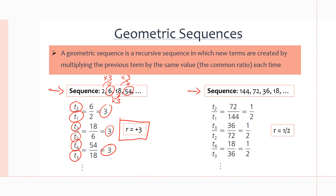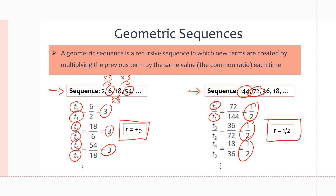For the next example we have 144, 72, 36, 18, and the numbers are decreasing. Taking the ratios: T2 over T1 is 72 divided by 144, which gives one half. The third term 36 divided by 72 gives one half. The fourth term divided by the third also gives one half. So our common ratio r is one half. This is recursive because to get 72 you multiply 144 by one half, to get 36 you multiply 72 by one half, and to get 18 you multiply 36 by one half.